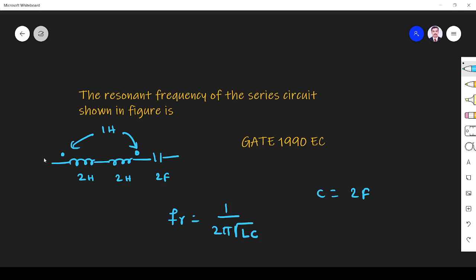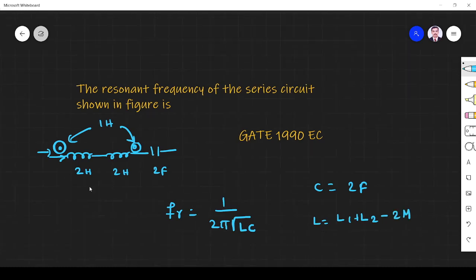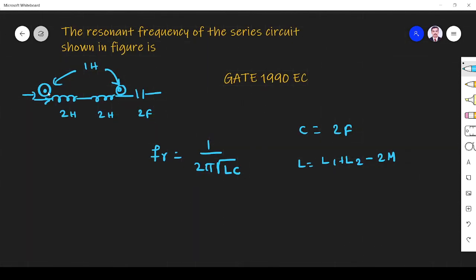See here current enters through this dot and leaves through this dot, so entering terminal is different. Here current enters here, here it is not entering here. So what is L? L is L1 plus L2 minus 2M, this we know. Because here the dot is as per the dot rule of inductor. Here the dot is at the input side, here the dot is at output side. So equivalent inductor is L1 plus L2 minus 2M.